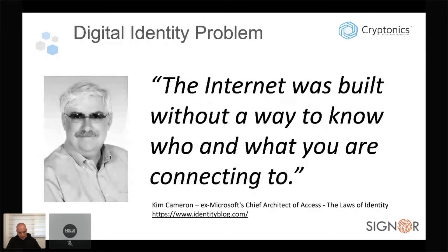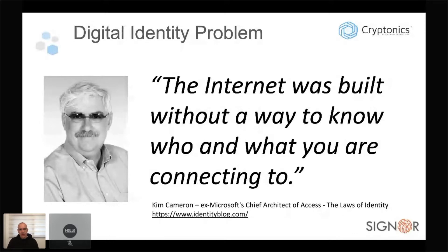Let's talk about digital identity. Digital identity is a complicated subject, mainly summarized in this phrase by Kim Cameron, who is one of the important people in the self-sovereign identity community: the internet was built without a way to know who and what you are connecting to. When the internet was first invented, it started as a military experiment and then quickly turned into an academic experiment. We just connected different machines together and didn't think about use cases like authentication and identity — these are not built into the internet protocols.